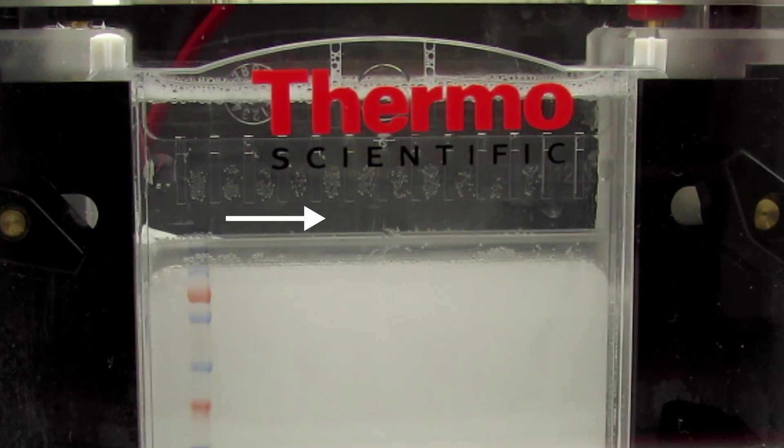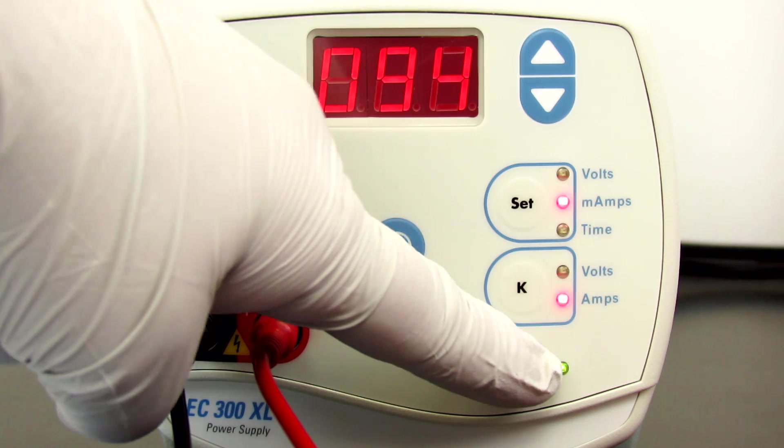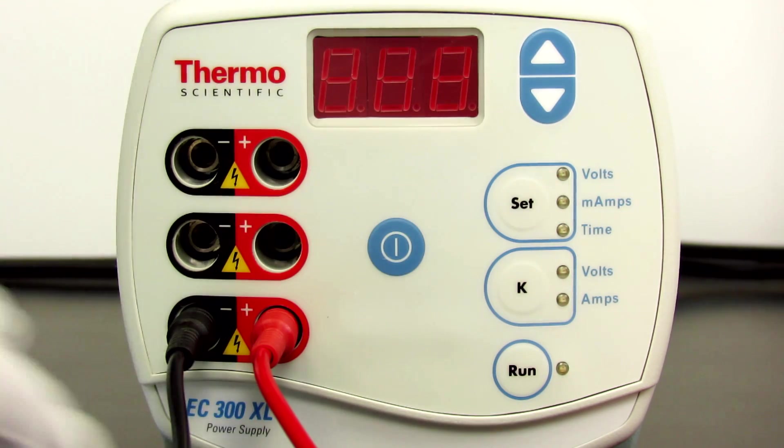Bubbles appearing around the cathode indicate that the current is flowing. Once the dye front reaches the bottom of the gel, turn the power off and unplug the cables from the power source.